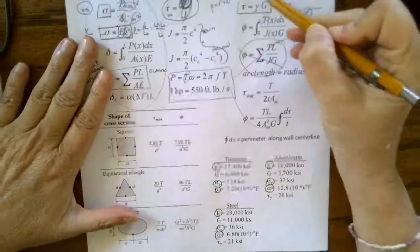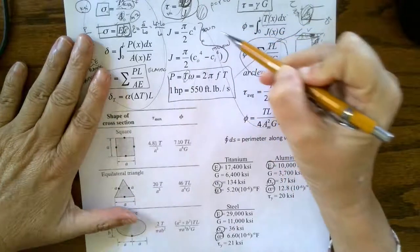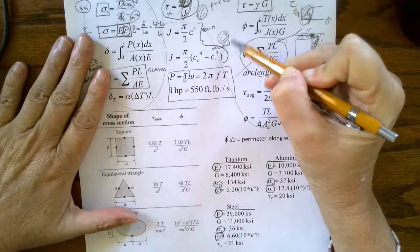This equation right here is for a circular cross-section, whether it's solid or hollow.